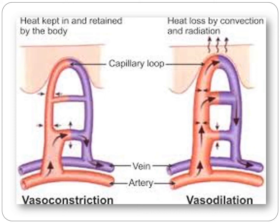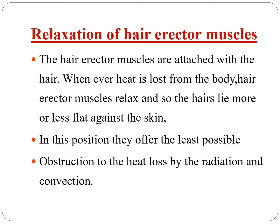Here again in this figure, two processes — viso-dilation and viso-constriction — are shown. In the process of viso-dilation, expansion of the blood vessels increases their diameter so more blood flows through them, with heat loss by convection and radiation. Additionally, the hair erector muscles relax, so the hair lies more or less flat against the skin, offering the least obstruction to heat loss by radiation and convection.